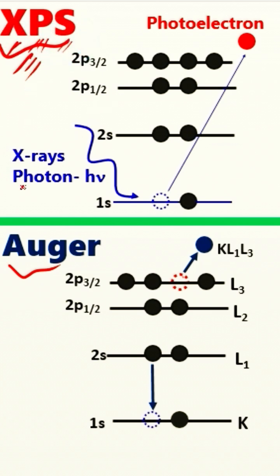In this technique, we simply bombard X-ray photons of certain energy, and the core electron is ejected. Those electrons are called photoelectrons.